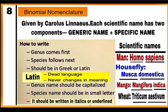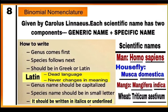Binomial nomenclature: it was given by Carolus Linnaeus, where each scientific name of an organism has two names — one generic name and one specific name. The genus name comes first and species name follows, written in Greek or Latin language because Latin is a dead language and never changes in meaning. Genus name starts with a capital letter while species name starts with a small letter. Scientific names should be written in italics or underlined. Examples: man — Homo sapiens; housefly — Musca domestica; mango — Mangifera indica; wheat — Triticum aestivum.